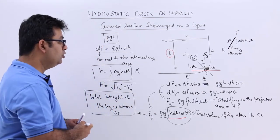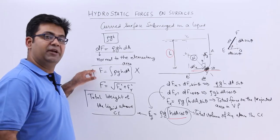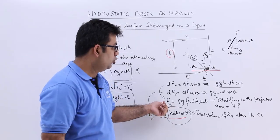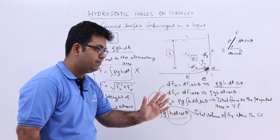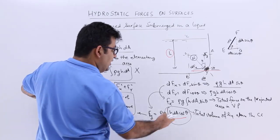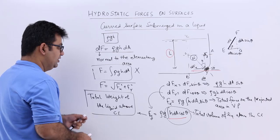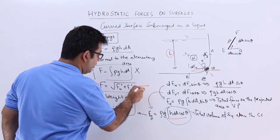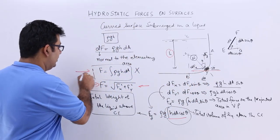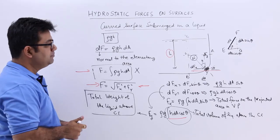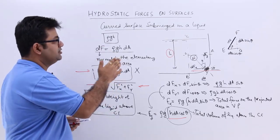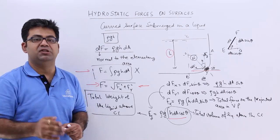So to find the total pressure force on the entire curved surface: we find Fx, which is the total pressure force on the projected area in the vertical plane, and Fy, which is the total weight of the liquid above the curved surface. We then use the formula — square root of Fx squared plus Fy squared — to calculate the total force, because we cannot simply integrate over the curved surface. I hope you understood this entire analysis on the curved surface submerged in a liquid. Now let's look at some questions on curved surfaces.